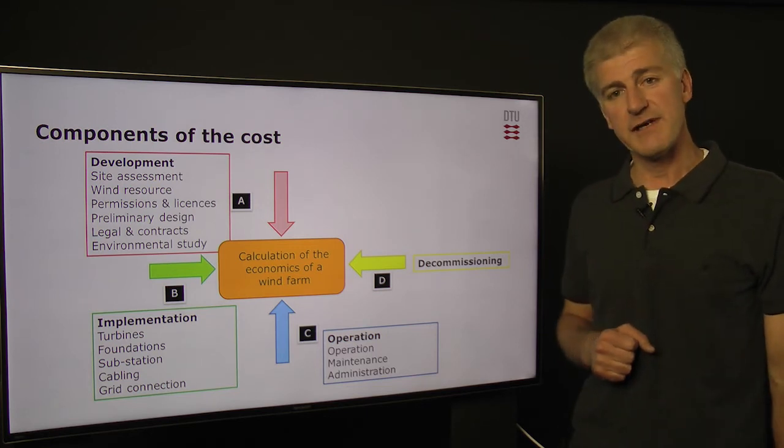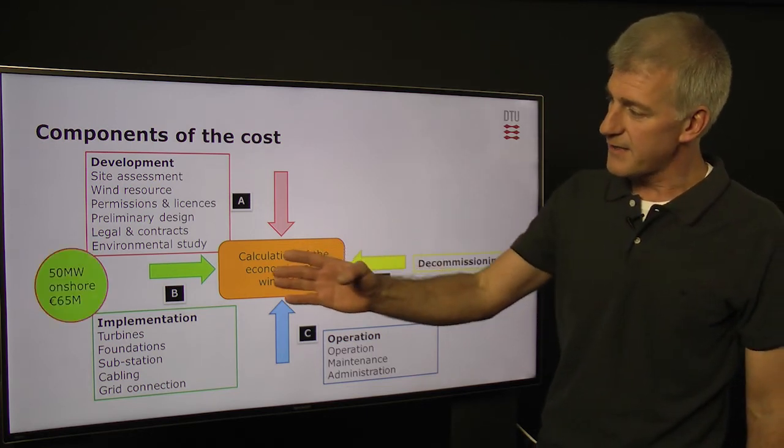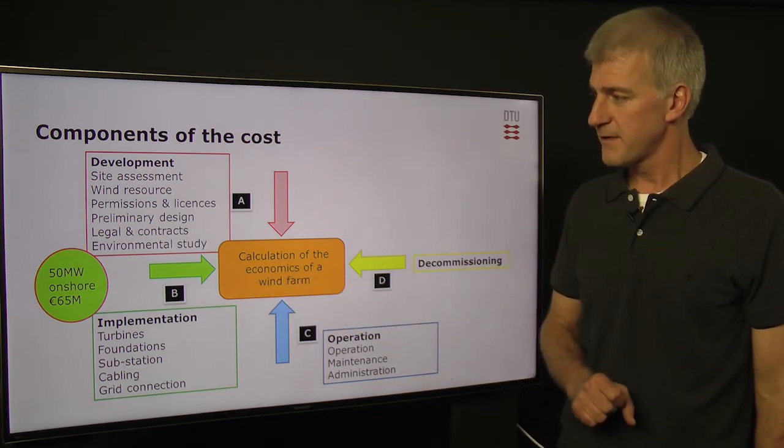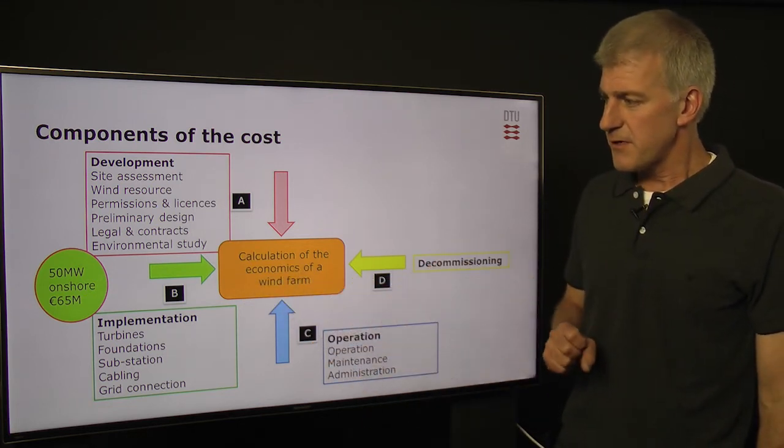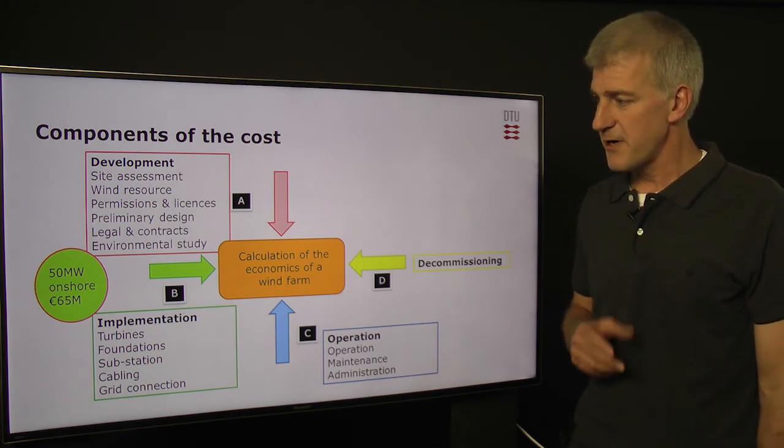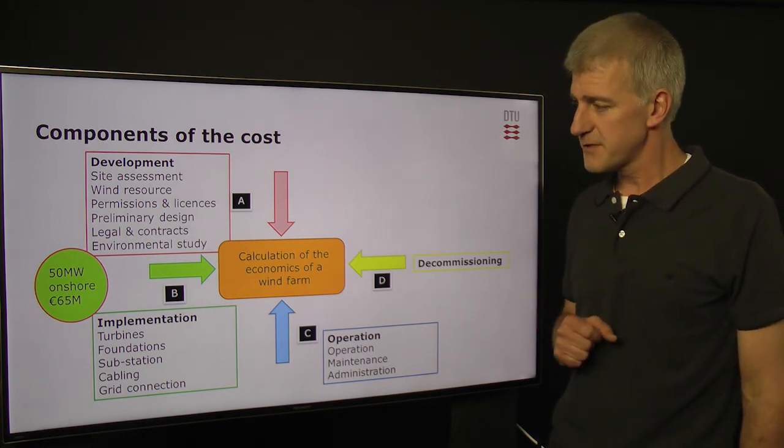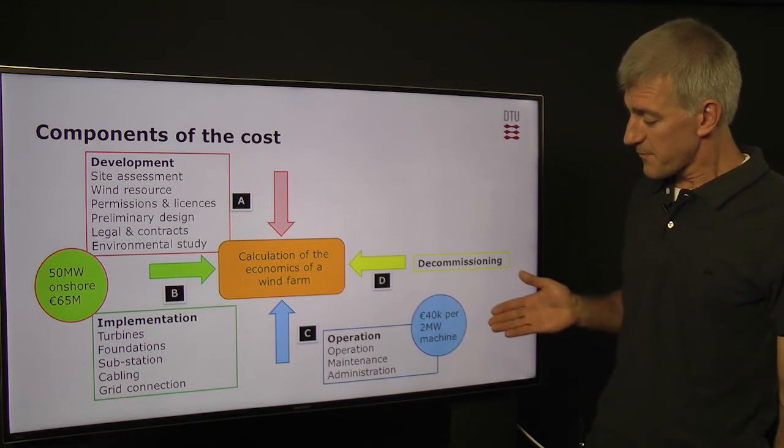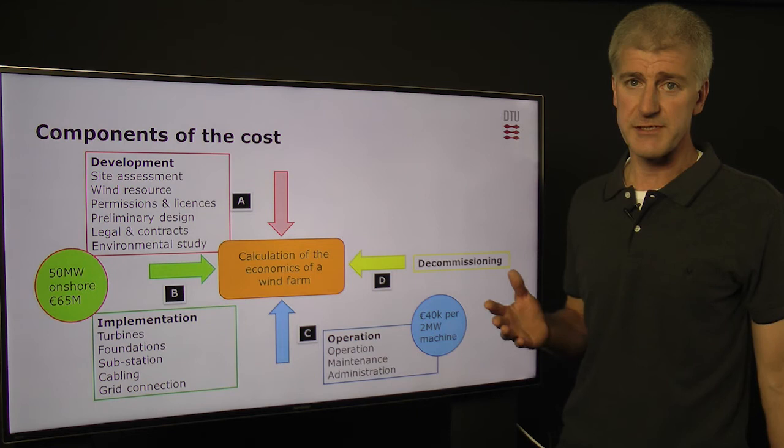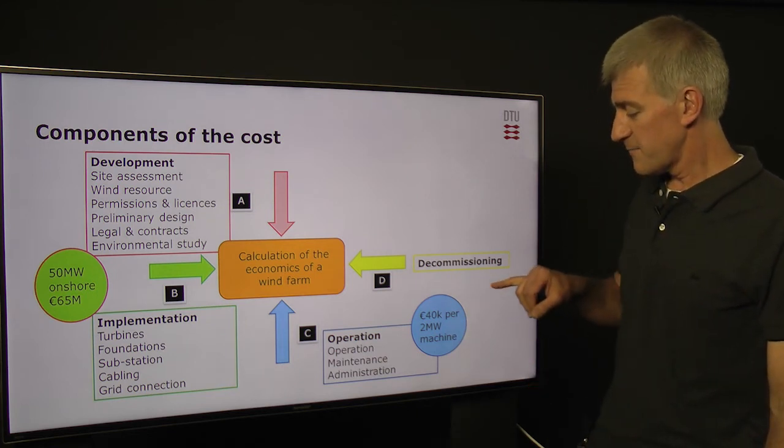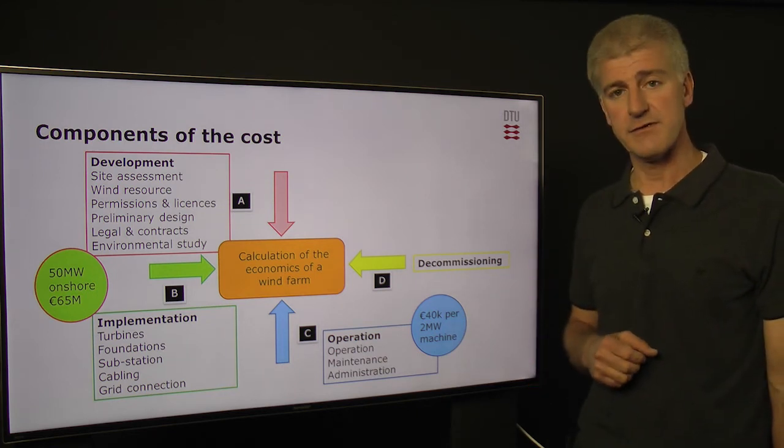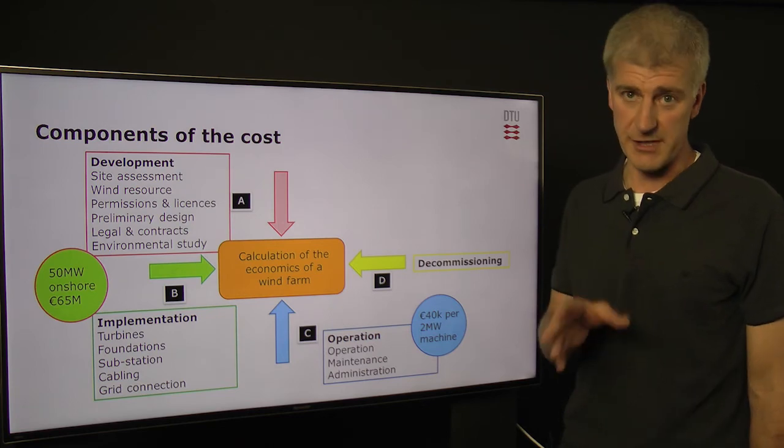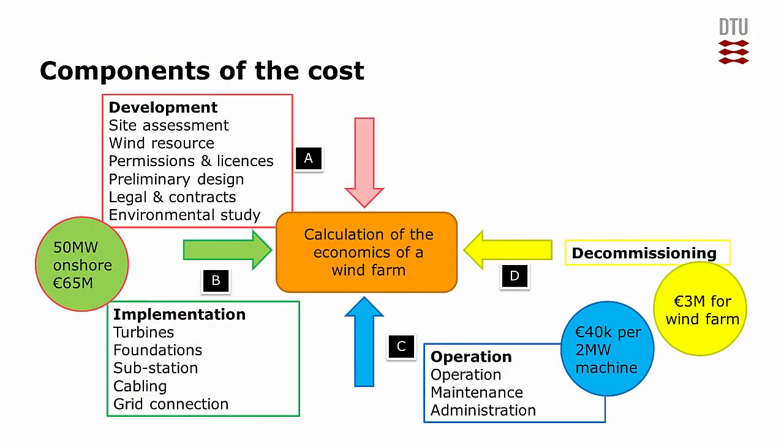How much might these phases cost? Let's just take a look at the development and implementation. For a fifty-megawatt onshore wind farm, we're looking at somewhere around about sixty-five million euros. These are, of course, very approximate figures. For the operation, for a two-megawatt machine, which is a very common size these days, we're looking at about forty thousand euro per machine per year. And finally, for the decommissioning, we might be looking at around about three million euro for the whole wind farm.